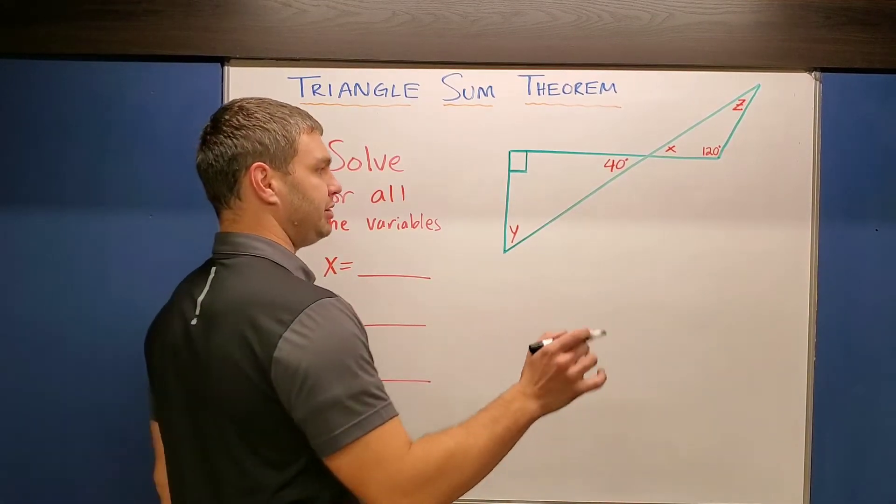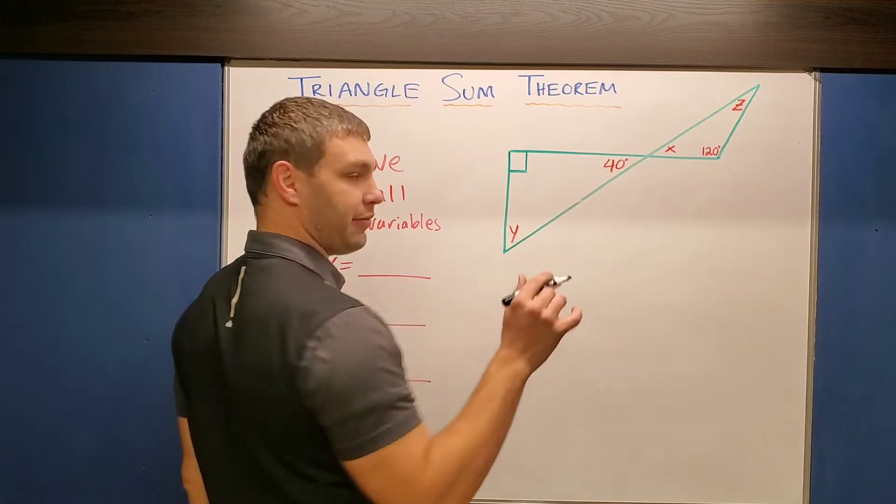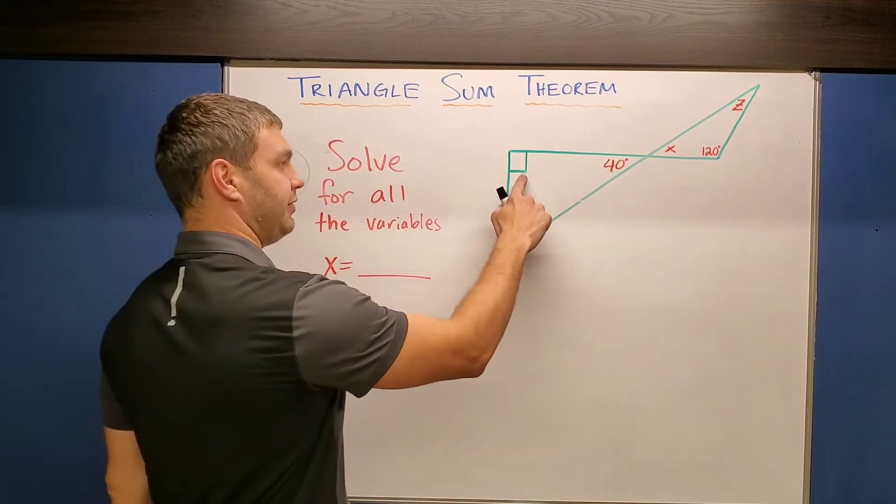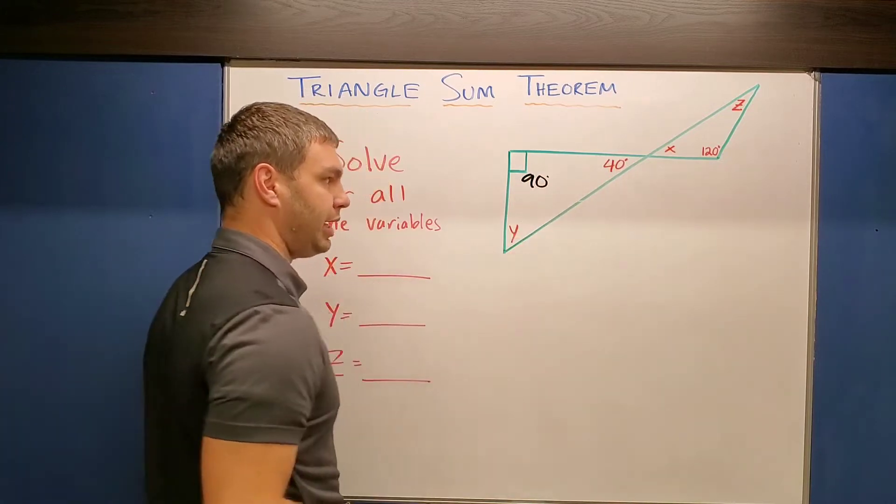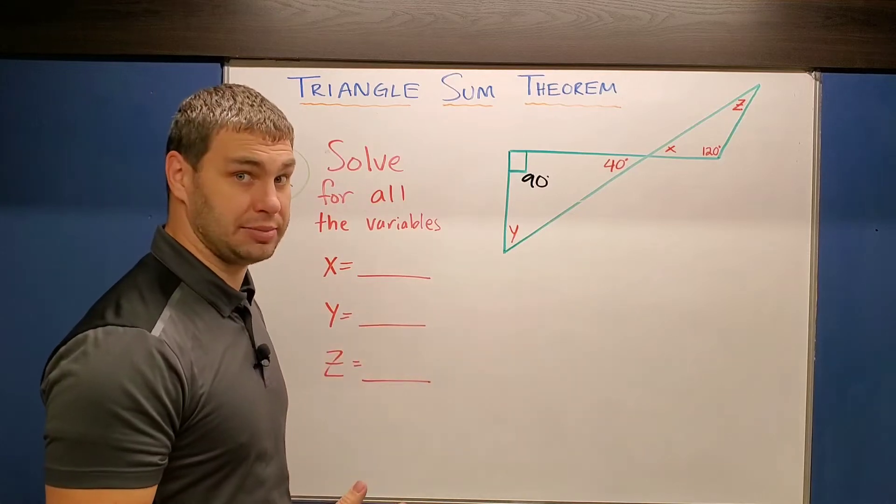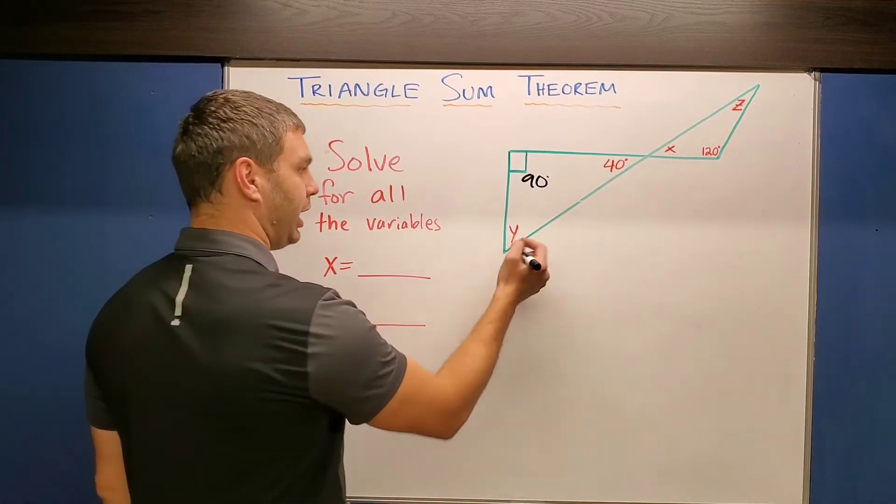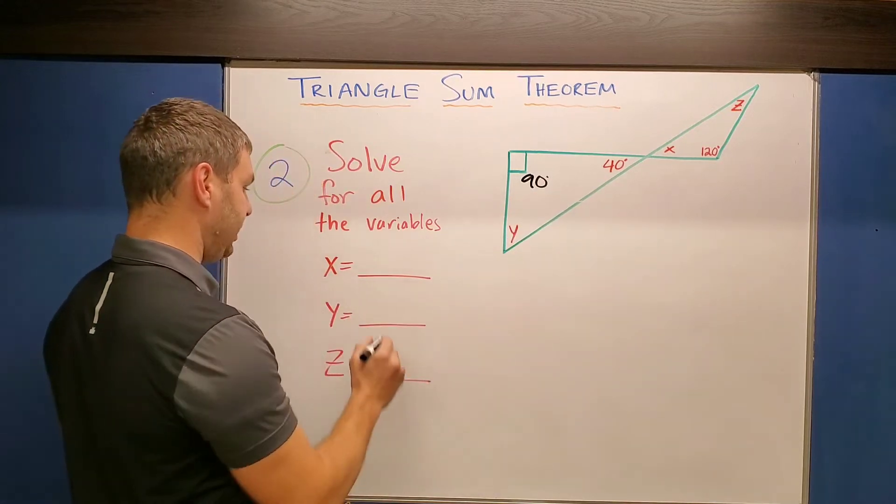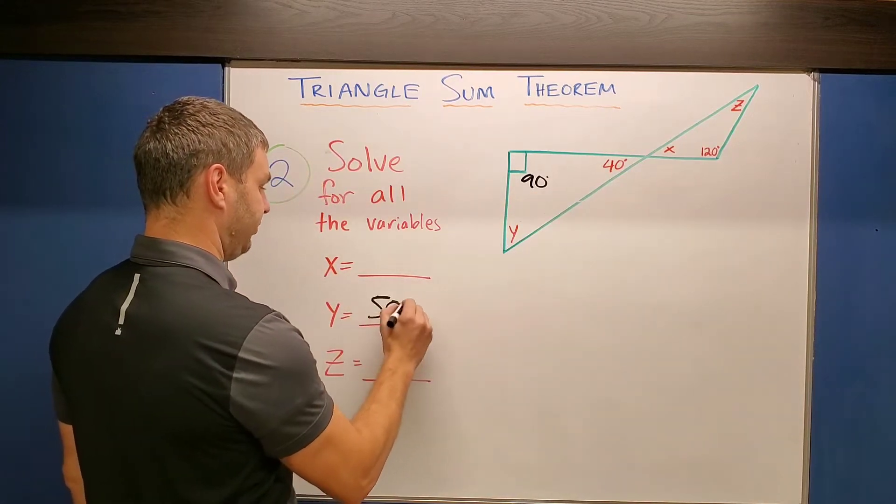So first off, what I'm seeing right away is that in this triangle, we have all our measures except for Y. So I have 90, 40, and then Y. So I need Y to add with 90 and 40 to get me to be 180. And to do that, Y would have to be 50, right? 50 plus 40 is 90, 90 plus 90 is 180. So Y is 50 degrees.